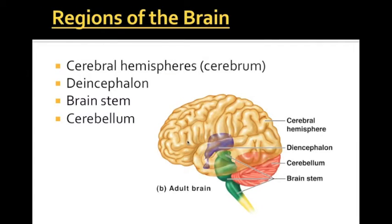When you think of the brain, or you've probably seen one before, the only thing you can see visibly is the cerebral hemispheres, and maybe a bit of the cerebellum in the back. When you look at the brain, you can see all of these ridges and grooves throughout it, and these do have anatomical names. The ridges are called the gyri — G-Y-R-I.